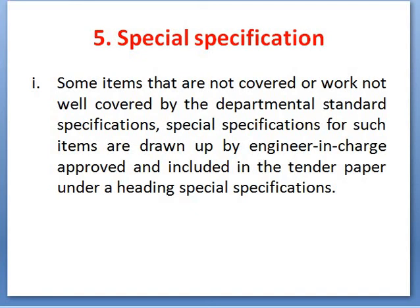Number five is special specifications. Some items are not covered, or not well covered, by the department's standard specifications. If some special type of work is to be carried out — different from general or conventional work — such as a special architectural treatment, then special guidelines for execution must be drafted. Such special guidelines for the execution of special types of work are laid down in special specifications.